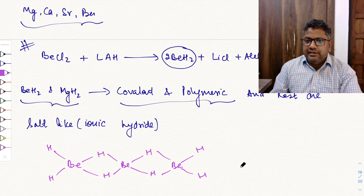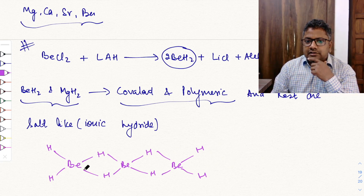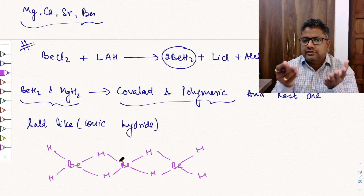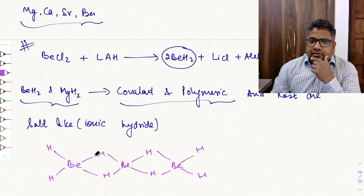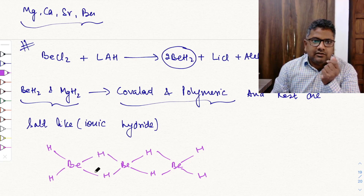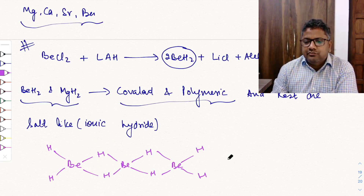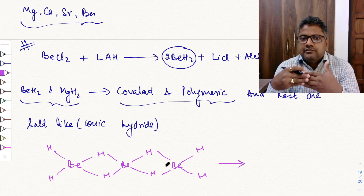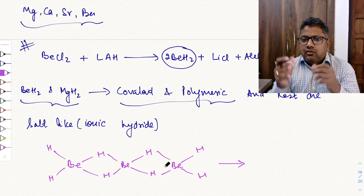BeH2 has a polymeric chain structure. In this structure, beryllium forms 3-center 2-electron bonds. Since beryllium has only 2 electrons in its valence shell, one electron from beryllium and one from hydrogen share a bond, and these 2 electrons bind 3 nuclei — this is the 3-center 2-electron bond. So BeH2 and MgH2 are both covalent and polymeric in nature.